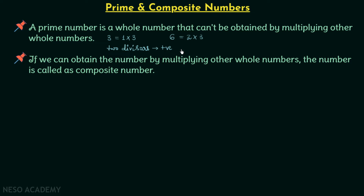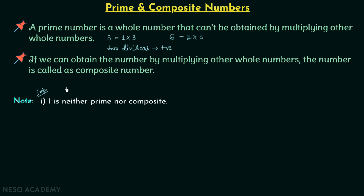One important point: one is neither prime nor composite. It is not prime because prime numbers have two positive divisors, but one has only one single divisor — itself. One is also not composite because we cannot obtain one by multiplying two other whole numbers; we can only get one by multiplying one with itself. Therefore, one is neither prime nor composite.